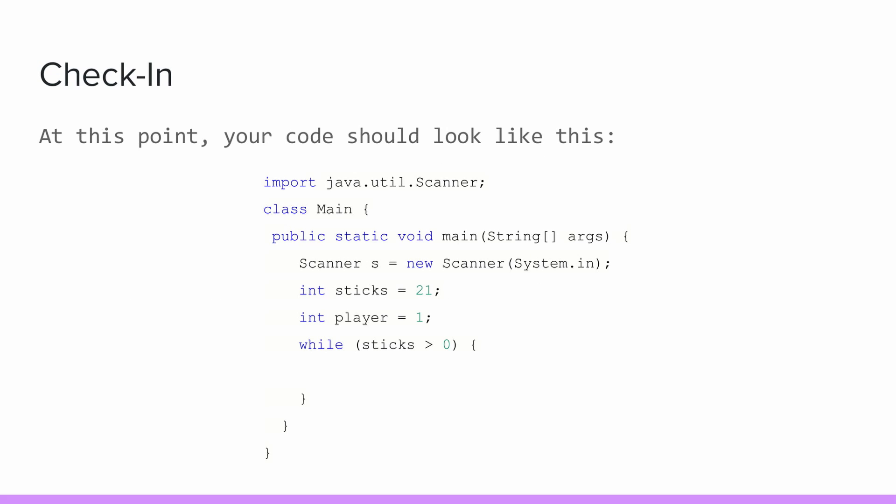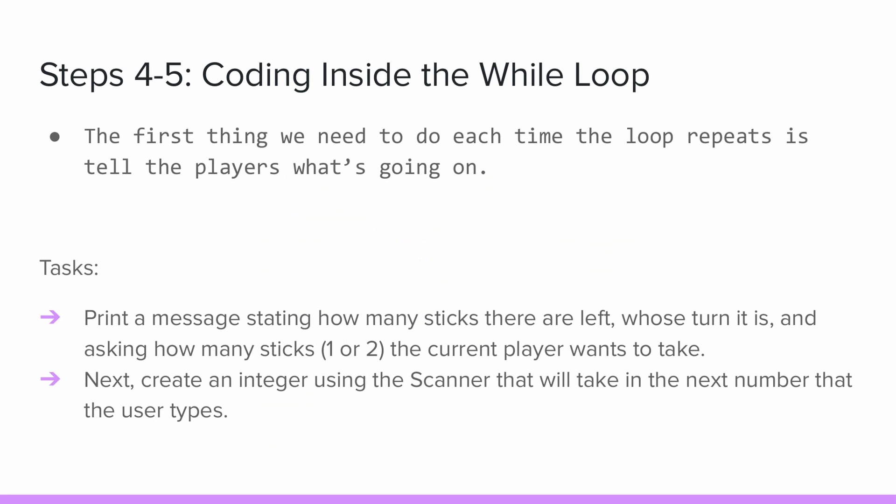If you haven't already, run your code to make sure there are no compile errors. Your code should look similar to this. So the first thing we need to do each time the loop repeats is tell the players what's going on. Let's print a message that'll say how many sticks are left, whose turn it is, and ask how many sticks the player wants to take. We'll also use a scanner to take in the integer the player inputs. Pause the video now and write your code.